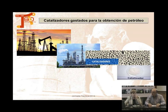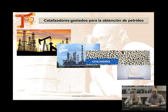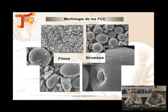Otro producto que estamos investigando es el de la industria del petróleo. Cuando en la industria petrolífera se extrae el petróleo, se necesitan ciertos materiales para la reacción que llamamos catalizadores. Esos catalizadores agotan su vida y ya no se pueden utilizar, tendrían que ir a vertedero. Pero hemos comprobado que tienen actividad puzolániga, y además vistos a través del microscopio son partículas muy bonitas.